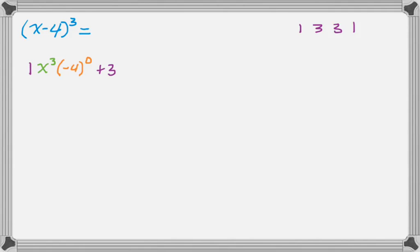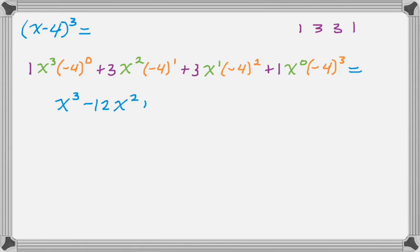So 3, and then it'll be x squared, negative 4 to the 1st, plus 3, x to the 1st, negative 4 to the 2nd. And then 1, x to the 0, and negative 4 cubed. And then we can work all that out.